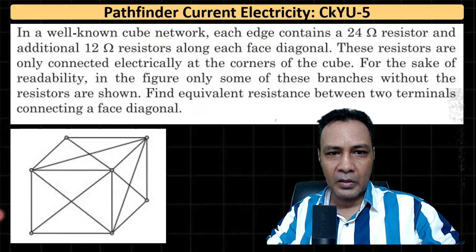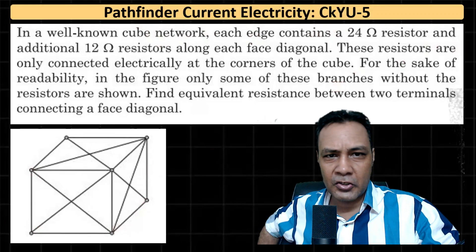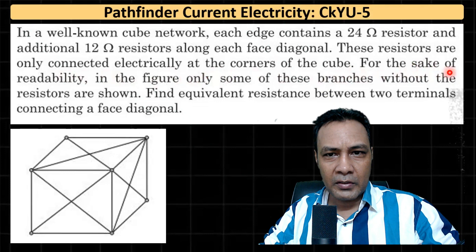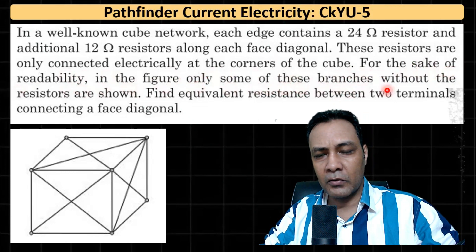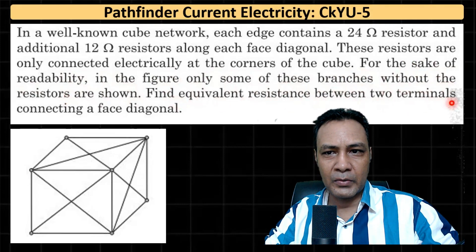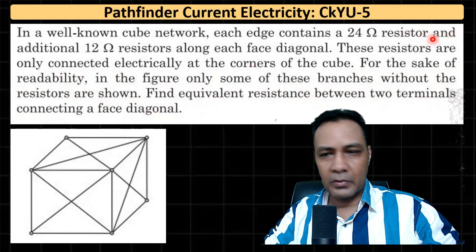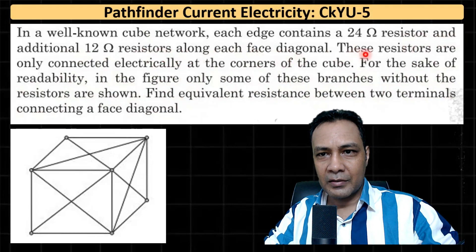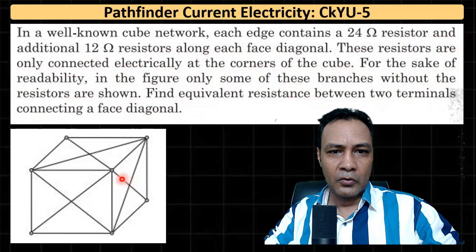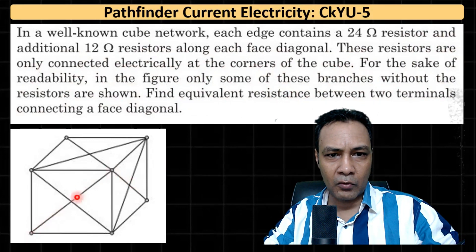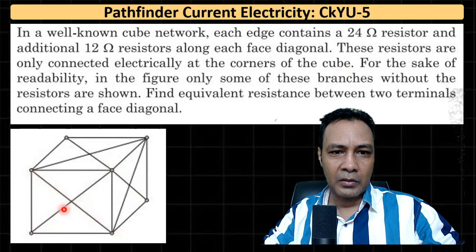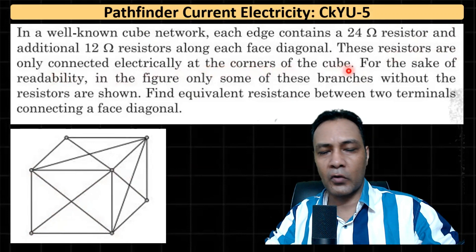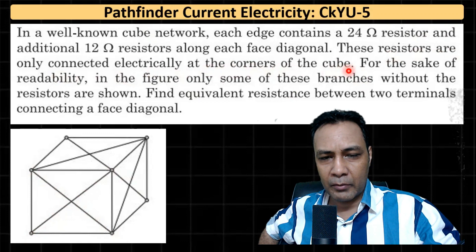This is a well-known cube network. Each edge contains a 24 ohm resistor, and an additional 12 ohm resistor along each face diagonal. These resistors are only connected electrically at the corners of the cube. For the sake of readability, the figure only shows some branches without the resistors. Find the equivalent resistance between two terminals connecting a face diagonal. The key issue is: the resistors are only connected electrically at the corners of the cube.